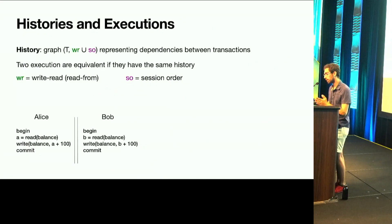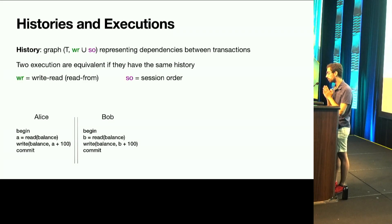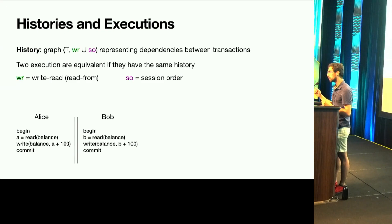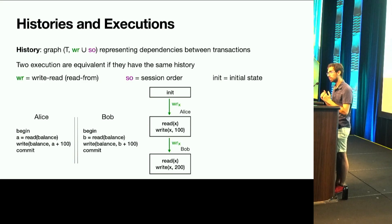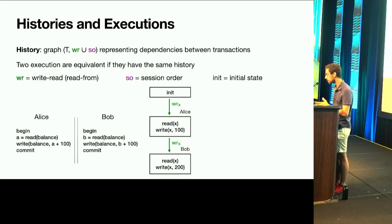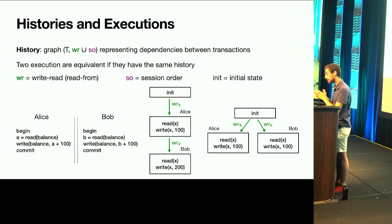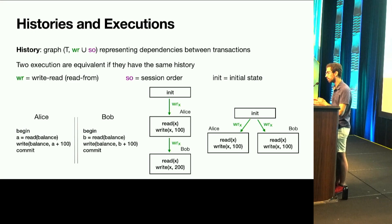For applying DPOR to distributed databases, the key notion is the notion of history — a graph representing dependencies between transactions — where two executions are equivalent if they have the same history. One dependency is write-read: every time you read a value, this value has to be written by someone, so there is a dependency between the read and the write that produced it. Another possible dependency is session order, between transactions that belong to the same session. For Alice and Bob, every execution where Alice reads from the initial state and Bob reads what Alice wrote, leading to Claire receiving 200 euros, is represented with one history graph, while executions where both read the initial state and each writes 100, missing each other's updates, are represented with another history.